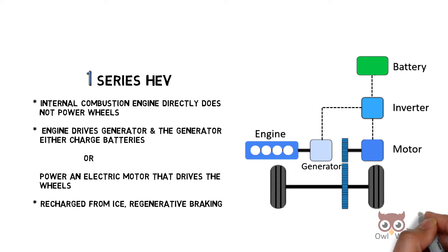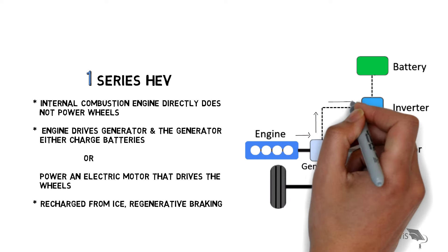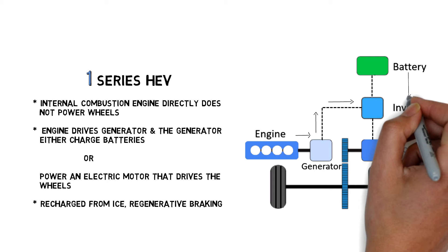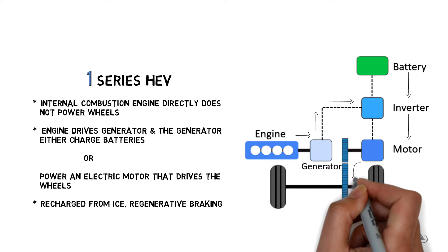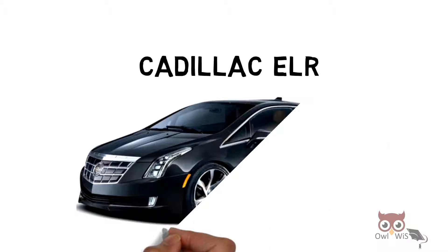As you can see, the power flow occurs from engine to generator, from the generator to inverter and then to the batteries which are recharged. Then from the batteries to inverter to motor, which finally drives the wheels. Cadillac ELR is an example of series HEV.